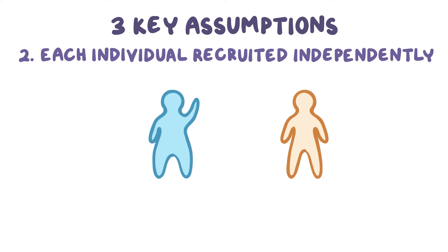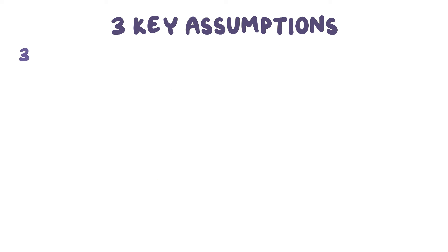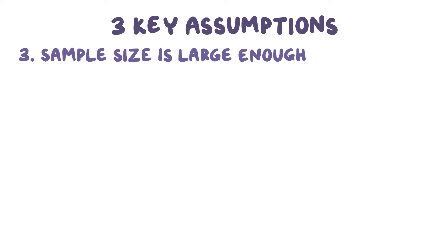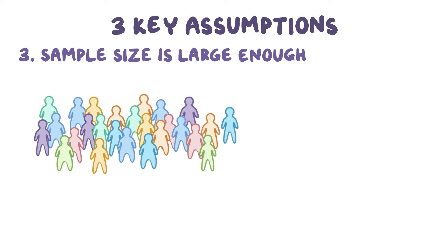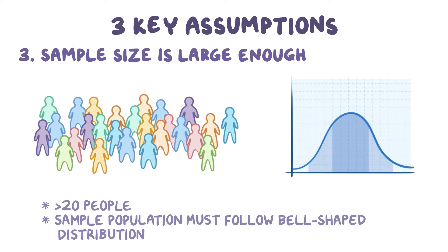Like random sampling, independent recruitment of individuals is important because it ensures that the sample population approximates the target population. The third assumption is that the sample size is large enough to approximate the target population, which usually means having more than 20 people. If it's impossible to get a large sample size, then the sample population must follow a normal bell-shaped distribution for the characteristic being studied, because that's what we'd expect to see in the target population.